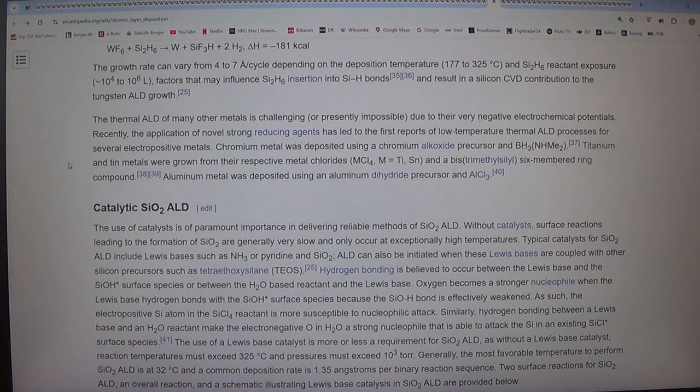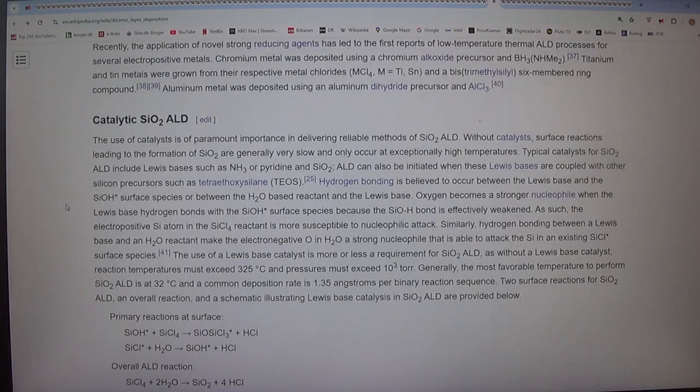Recently, the application of novel strong reducing agents has led to the first reports of low temperature thermal ALD processes for several electropositive metals. Chromium metal was deposited using a chromium alkoxide precursor and BH3·NHMe2. Titanium and tin metals were grown from their respective metal chlorides (MCl4, M equals Ti, Sn) and a bis(trimethylsilyl) six-membered ring compound. Aluminum metal was deposited using an aluminum dihydride precursor and AlCl3.